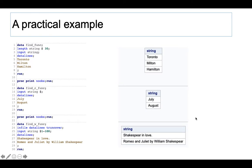In the first example, you can see we create a dataset with three cities: Toronto, Milton, and Hamilton. In the second dataset, I created two entries just to demonstrate find character — the months July and August. I picked those two because July is named after Julius Caesar, and August is named after his nephew Augustus Caesar.